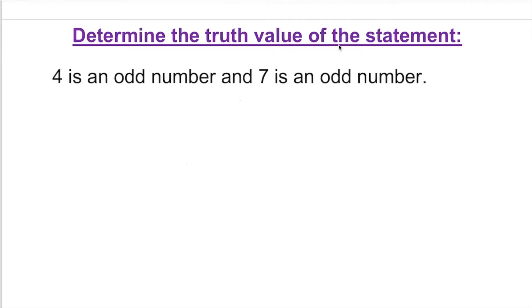So let's talk about the truth table for this statement. In this case, we're going to encounter AND. Last video we talked about OR or disjunction. This time we're going to talk about conjunction, something happening simultaneously. So 4 is an odd number and 7 is an odd number. How are we going to find the truth value?